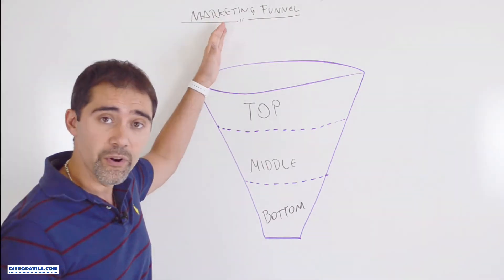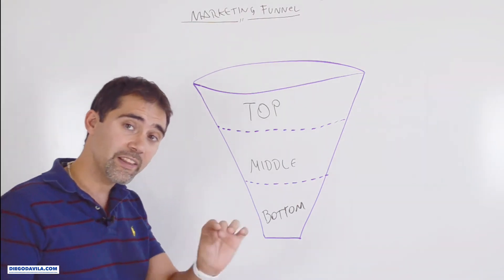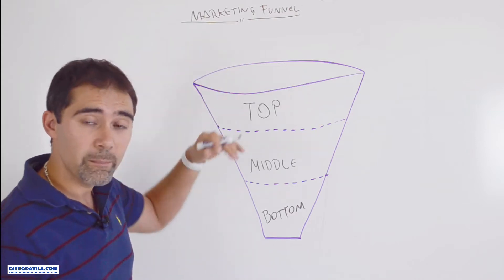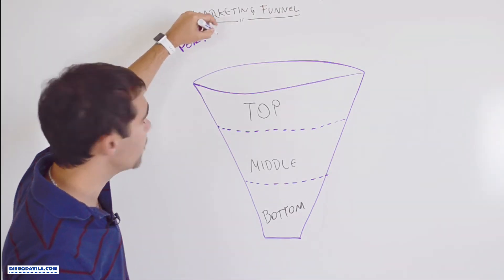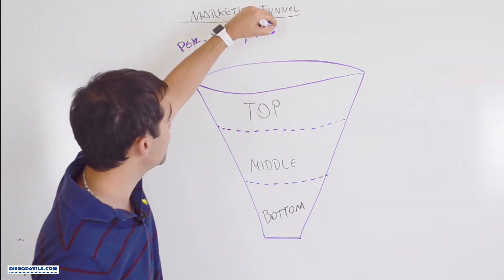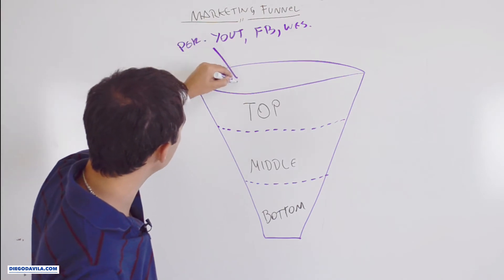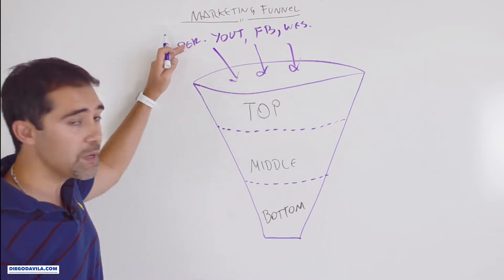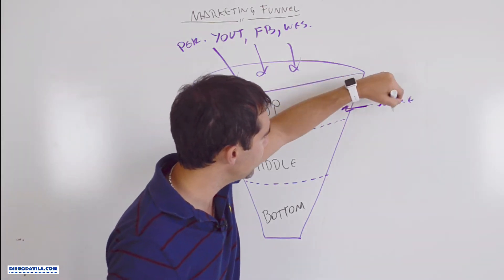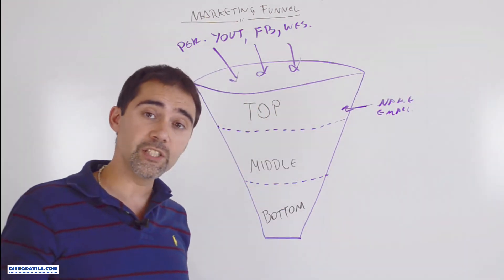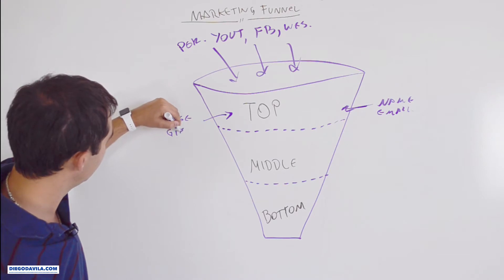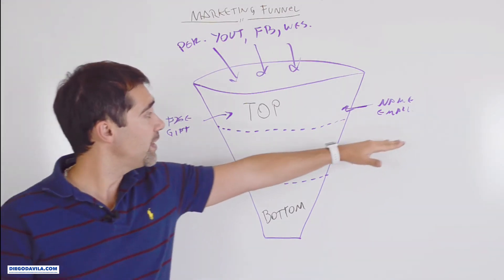So first, about the marketing funnel — we can divide the funnel in three main parts. The top part, the middle, and the bottom. The top part is where you need to drive people from your Periscope, from your YouTube channel or YouTube videos, and from your Facebook to your marketing funnel. On the top, we have one goal: get their name and their email in exchange for a free gift.